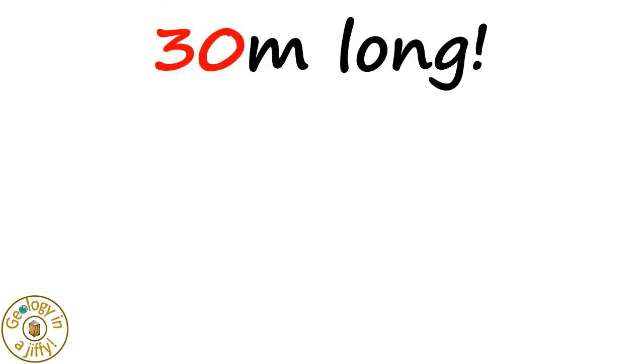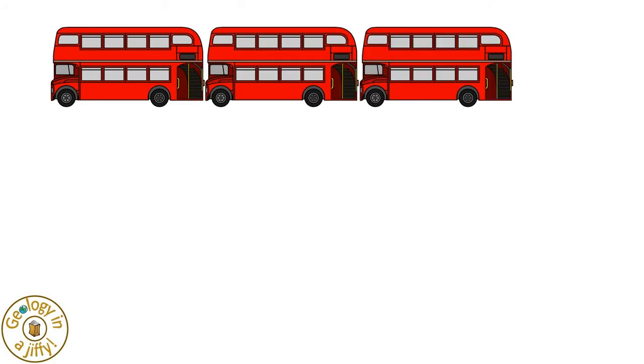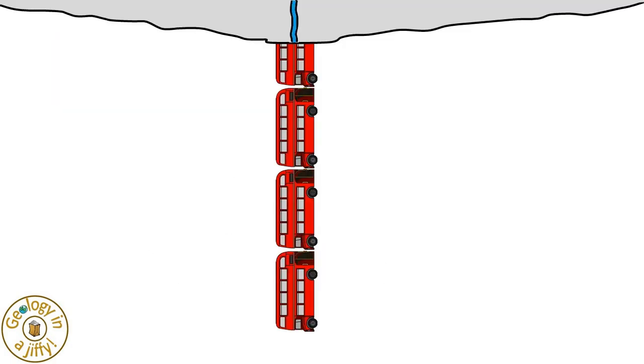Some stalactites in France are about 30 metres long. To give an idea of the size of such stalactites, think of an old red coloured London bus. 30 metres is not the length of one bus, but three and three fifths bus lengths. That's amazing!